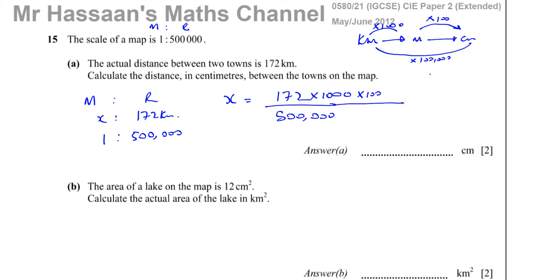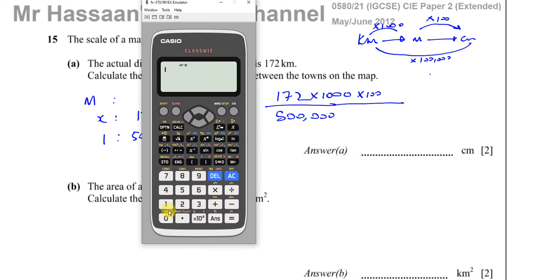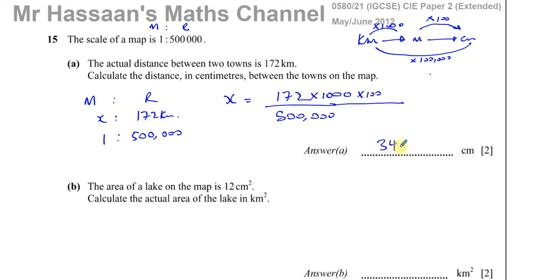So the answer will be given by 172 multiplied by 100,000, divided by 500,000. That gives us 34.4 cm on the map. That will be the distance between those two towns on the map.